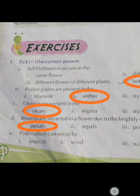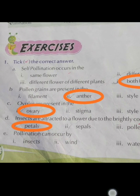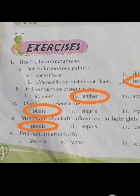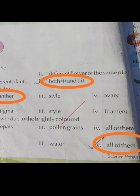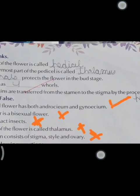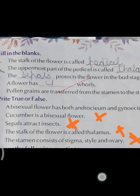Second: pollen grains are present in the anther. Ovules are present in the ovary. D part: insects are attracted to the flower due to the brightly colored petals. E part: pollination can occur by all of them — insect, wind, water. F part: the stalk of the flower is called the peduncle.